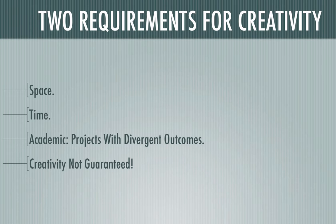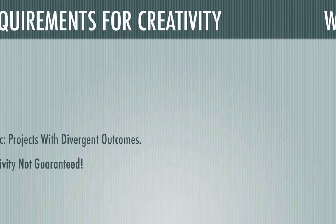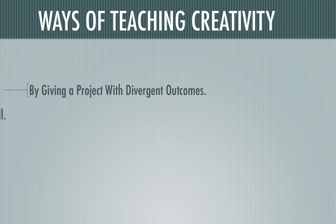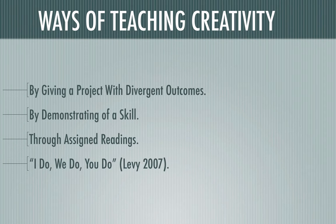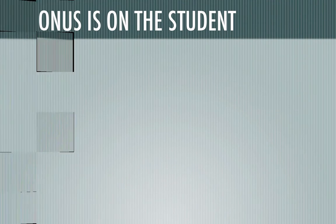Academically speaking, we need to administer projects with divergent outcomes. And in these parameters, creativity is not guaranteed. Ways of teaching creativity are giving a project with divergent outcomes, by demonstrating a skill through assigned readings, and by using the I do, we do, and you do model of teaching, which is a gradual release of responsibility. You show the student something, then we all do it as a group, and then the student takes that and runs with it.